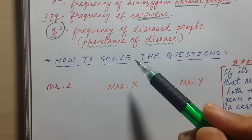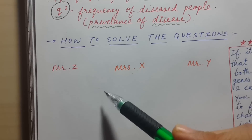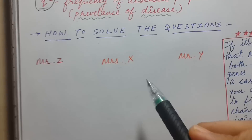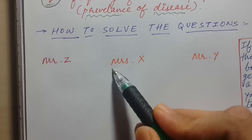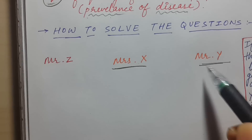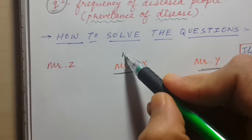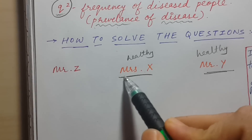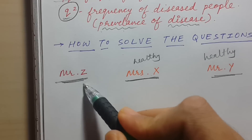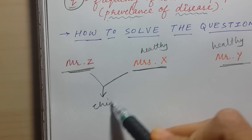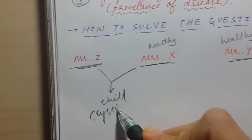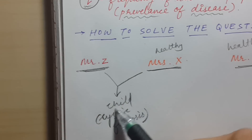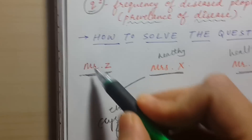Now let's try to understand how to solve questions using the Hardy-Weinberg equation. Here is a classic scenario given in every question bank. Mrs. X is married to Mr. Y, and both are healthy. The vignette also mentions that Mrs. X was previously married to Mr. Z, and both of them had a child who was suffering from cystic fibrosis — or any other autosomal recessive disease.